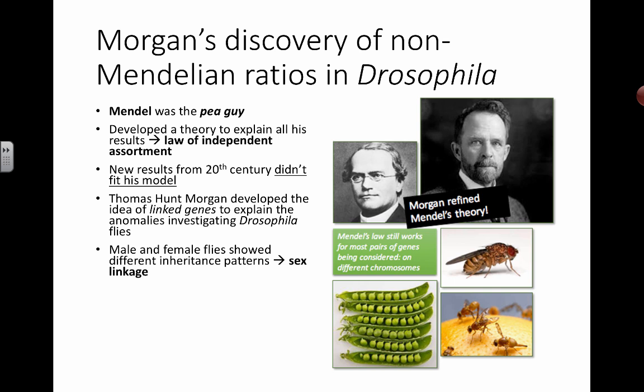What he found when looking at the ratios was that male flies and female flies ended up with very different inheritance patterns. He proposed that some genetic traits could actually be linked to the sex or gender of the flies — so it was called sex linkage. We know from IB biology that sex linkage does exist.